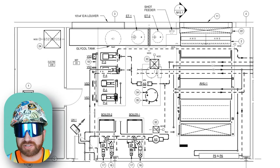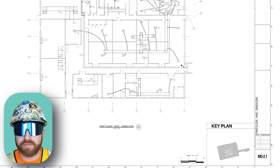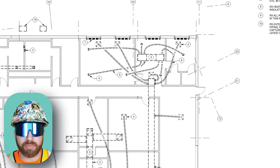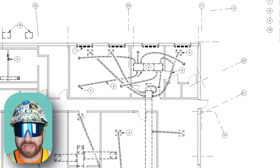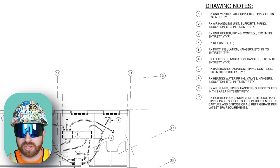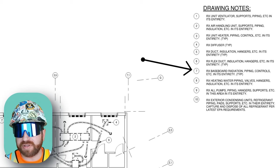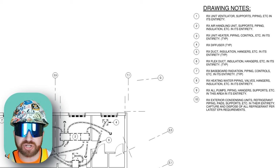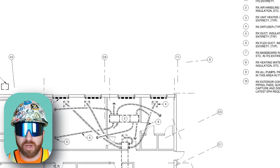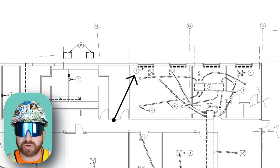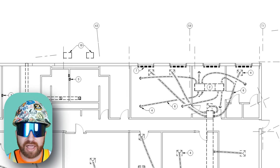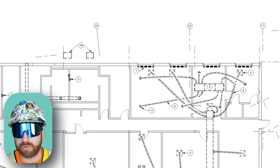Let's start making sense of these systems by looking at MD 2.1 First Floor HVAC Demolition. The drawing has a bunch of numbers, and we can gather all this information from our keynotes. For example, note number seven is 'remove existing baseboard radiation piping controls in its entirety.' Read all these keynotes as they relate back to the drawings — this would be the scope for the HVAC demolition.